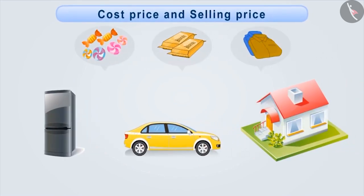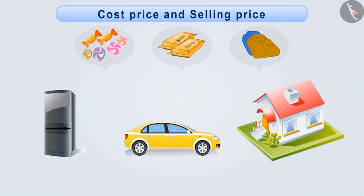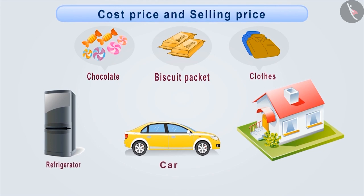Each one of us likes shopping. We buy everything from small items like chocolates, biscuits, clothes, to big items like refrigerators, cars, houses etc. In each and every purchase, there are some important concepts like cost price and selling price. Let's understand them.